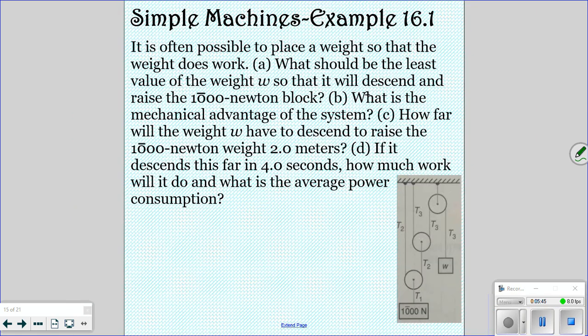Okay, so let's look at an example. It is often possible to place a weight so that the weight does the work. So we want to put a weight here so that this 1,000 will get pulled up. We want to know what is the least value that the weight can be so it will pull a 1,000 newton block. What is the mechanical advantage of the system? How far will the weight have to descend to raise the block 2 meters? If it descends this far in 4 seconds, how much work will it do and what is the average power consumption? So that's a lot that we have to do in this one problem.